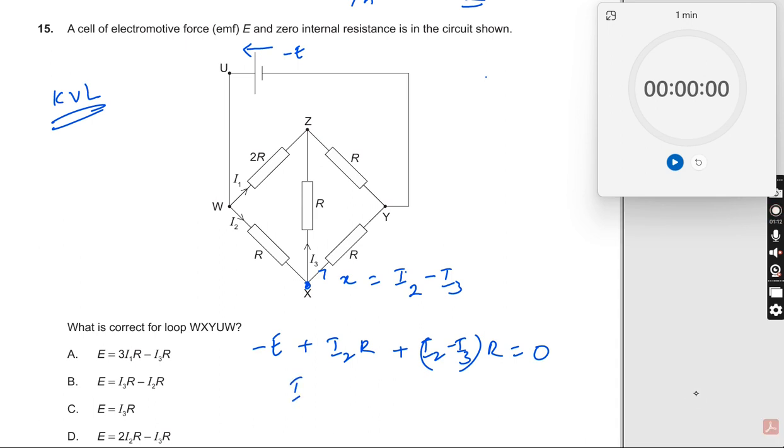So I can now write I2 into R plus I2 into R should be 2 times I2 into R minus I3 into R should be equal to E. What is the right equation? Option D.